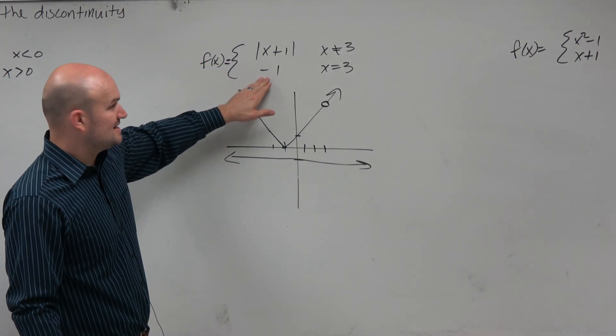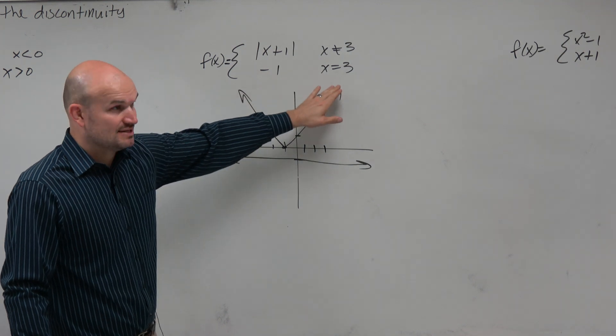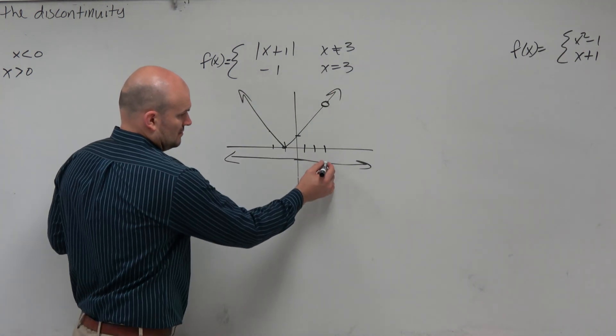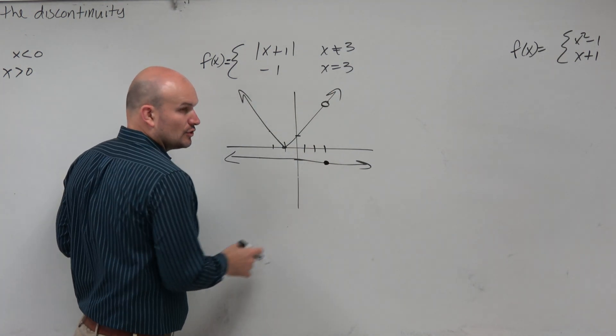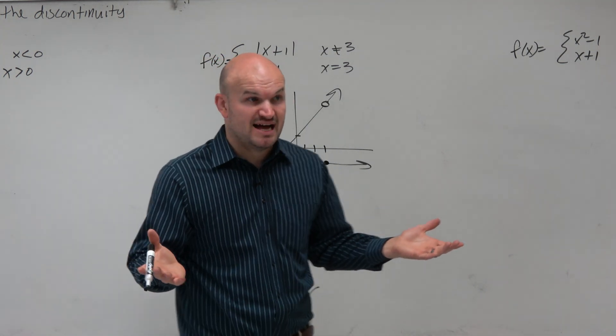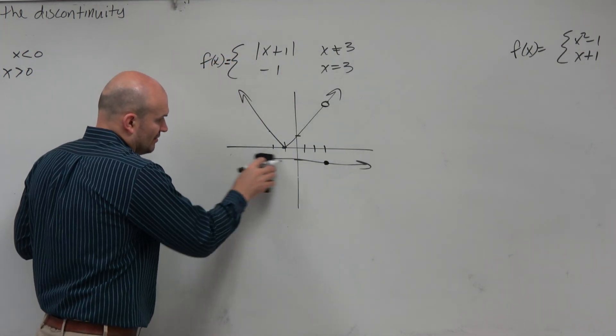Then we go look at negative 1. And it says this function is only true when x is equal to 3. So then the rest of the graph is not defined. So we just erase.